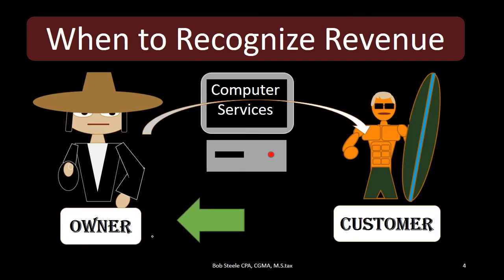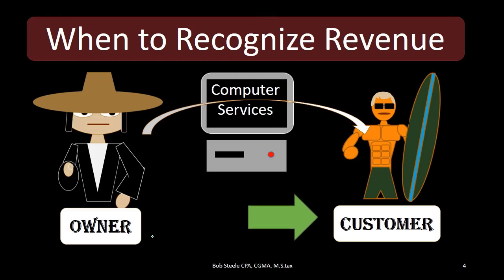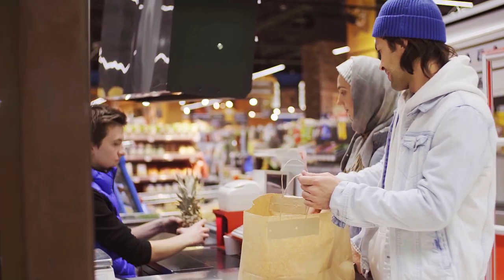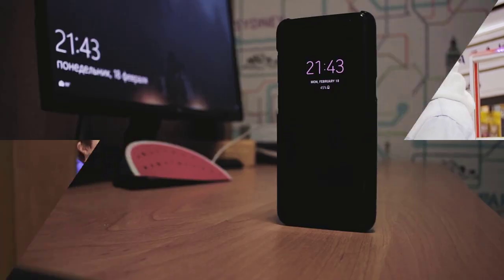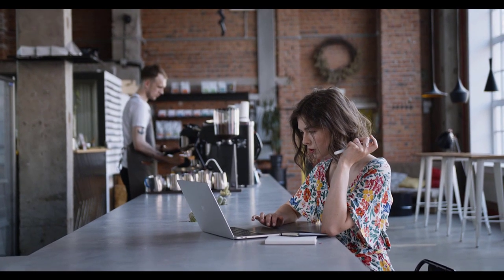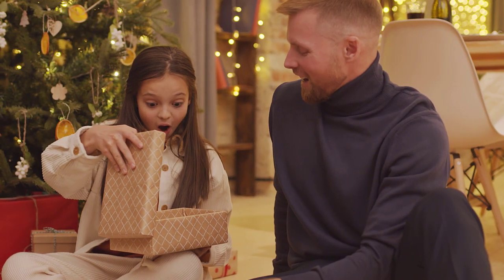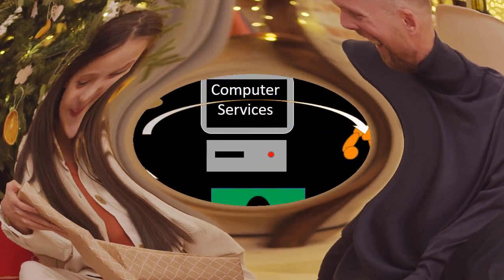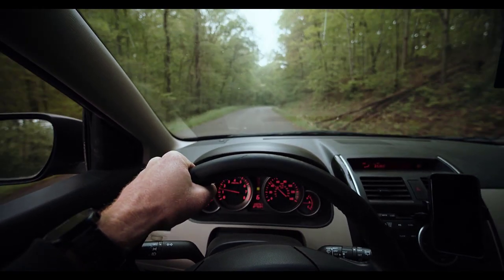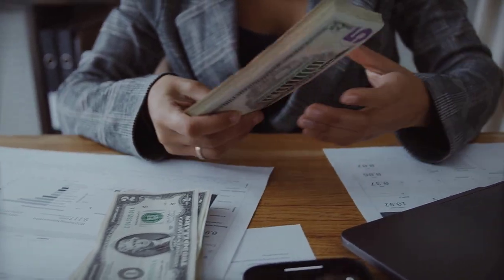Our first example: an owner doing computer services for a customer. If cash is received at that same point in time the work is done, then we will record revenue at the same time cash is received. However, under the revenue recognition principle, the driving factor for recording revenue at this point in time is not because we received cash, but because it is the point in time we did the work.